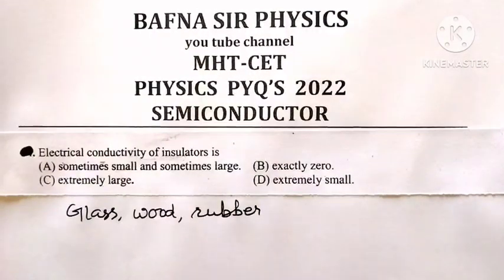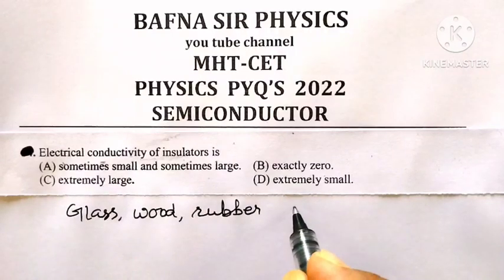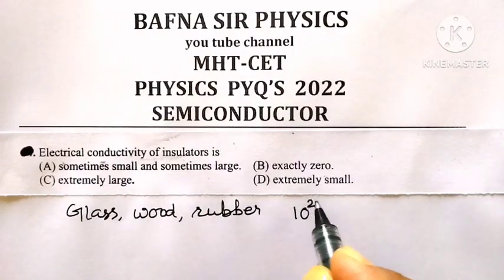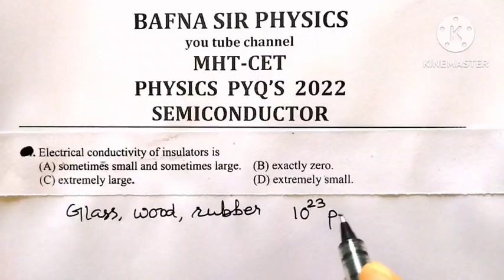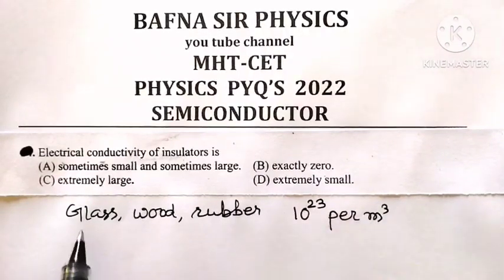These insulators will have a very small number of free electrons - that is 10 raised to 23 free electrons available per cubic meter of glass, wood, or rubber.